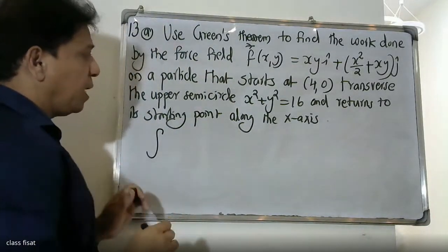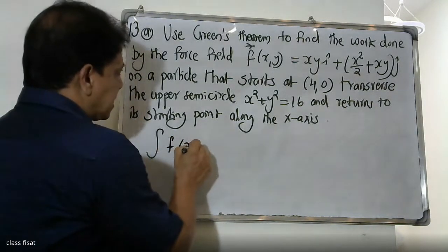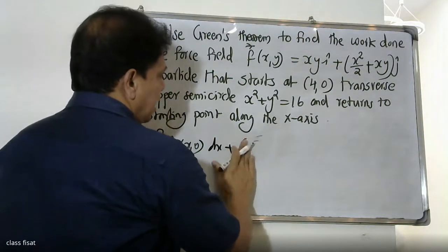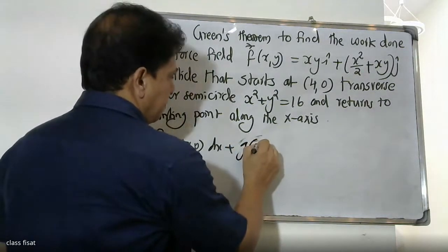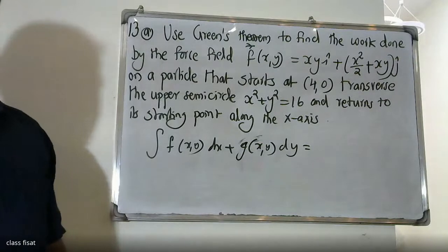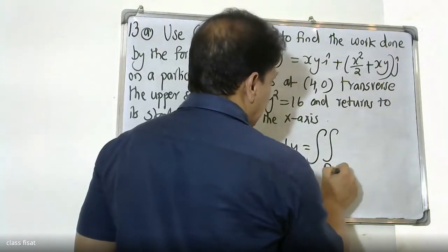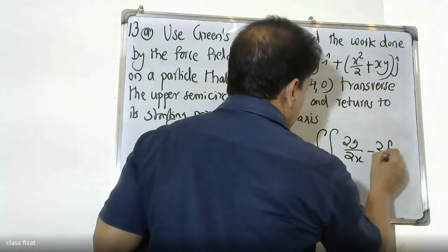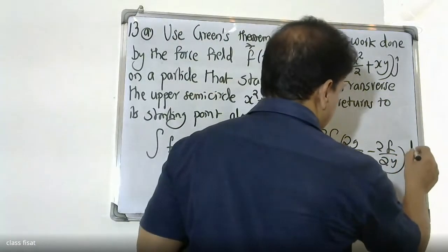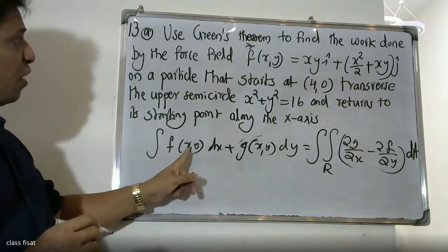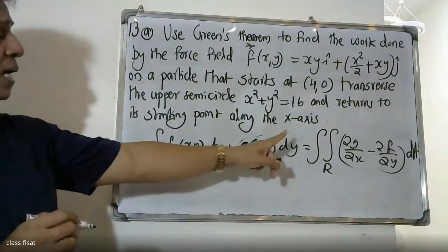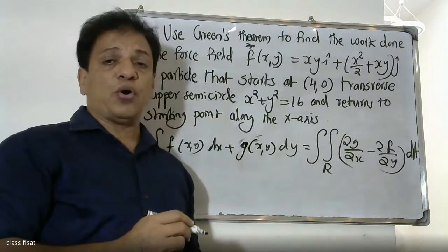Green's Theorem states that the line integral ∮ F·dr = ∮(f dx + g dy) is equal to the double integral over region R of (∂g/∂x − ∂f/∂y) dA. That is the formula: the closed line integral equals the double integral of (∂g/∂x − ∂f/∂y) dA.